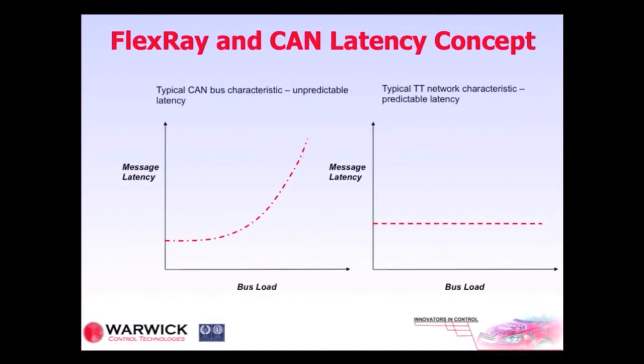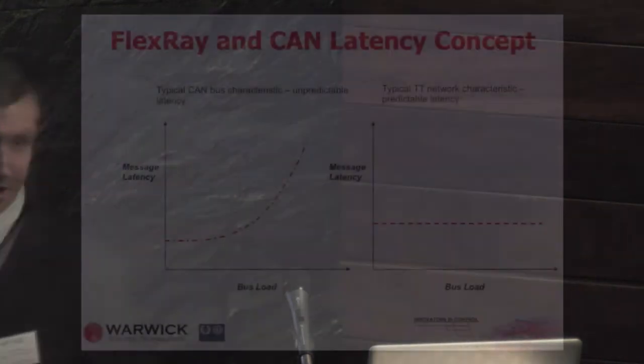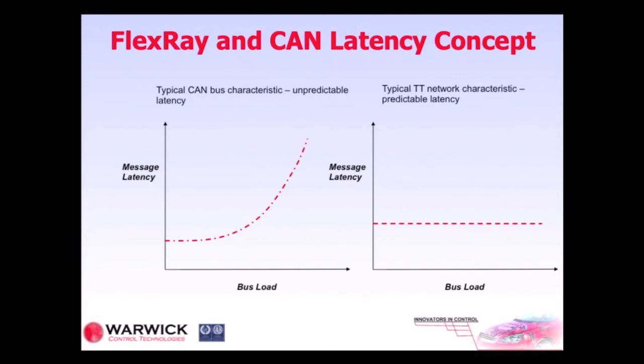The next thing to consider is the latency characteristic between CAN and a time-triggered network such as FlexRay. If you have a contention-based network such as CAN, and if you design the system badly, the bus load will start going up and certain messages will start losing access to the network. With FlexRay, especially with the static segment, because there's an exclusive window of time, you get a flat characteristic — which means it's deterministic, which is good for safety systems.